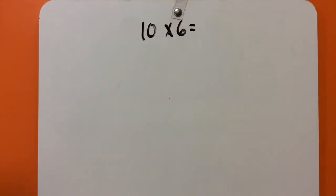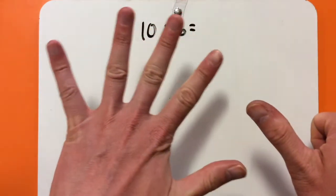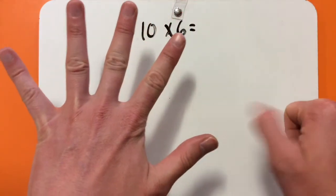For this second problem, I'm going to start with my fingers this time. So, I'll put 10, for 10 times 6, I'll put 6 fingers out, and I'll count by 10. So, 10,